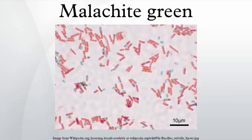Malachite green can also be used as a saturable absorber in dye lasers, or as a pH indicator between pH 0.0 and 1.8. However, this use is relatively rare.